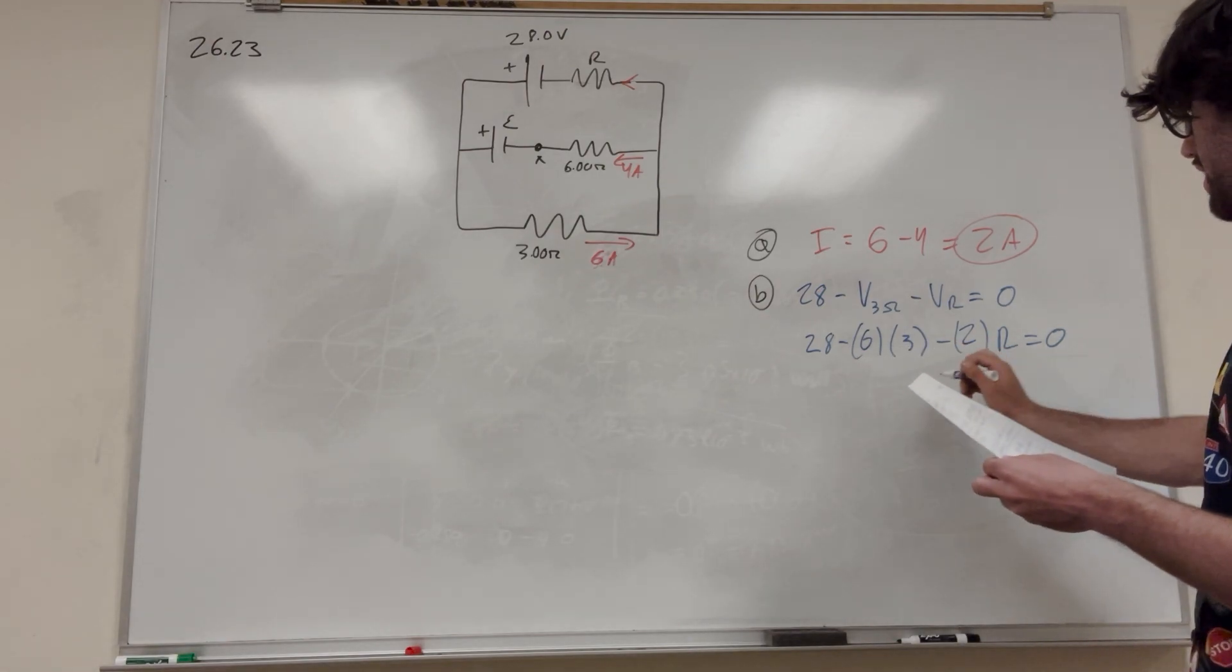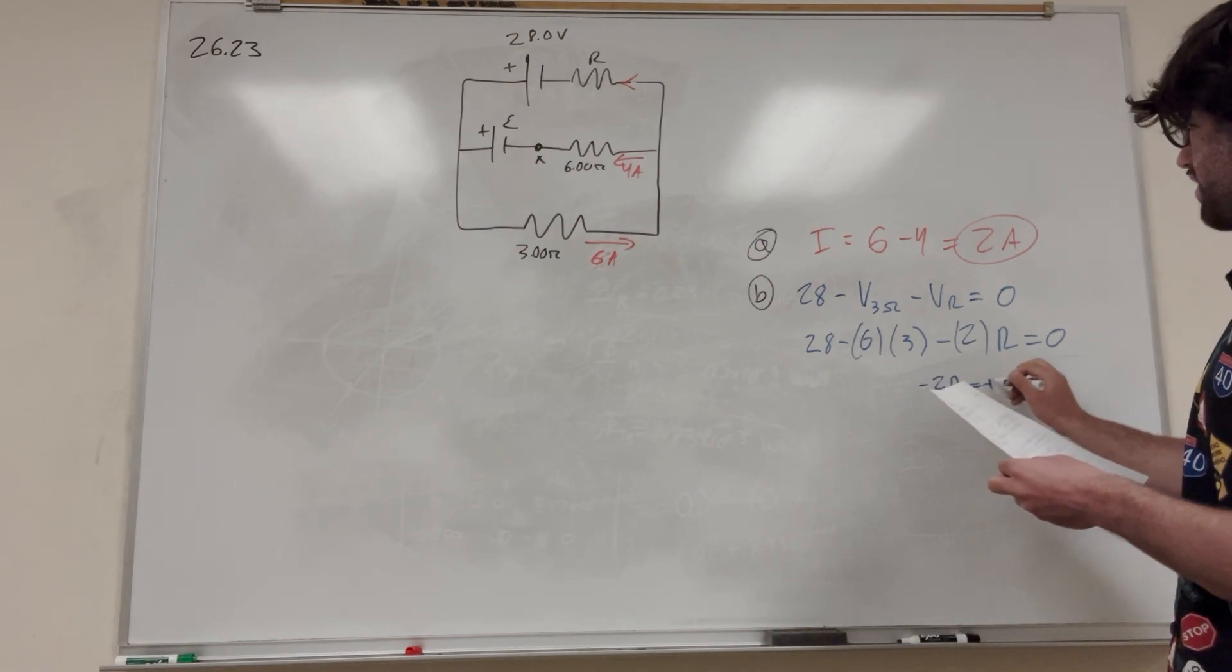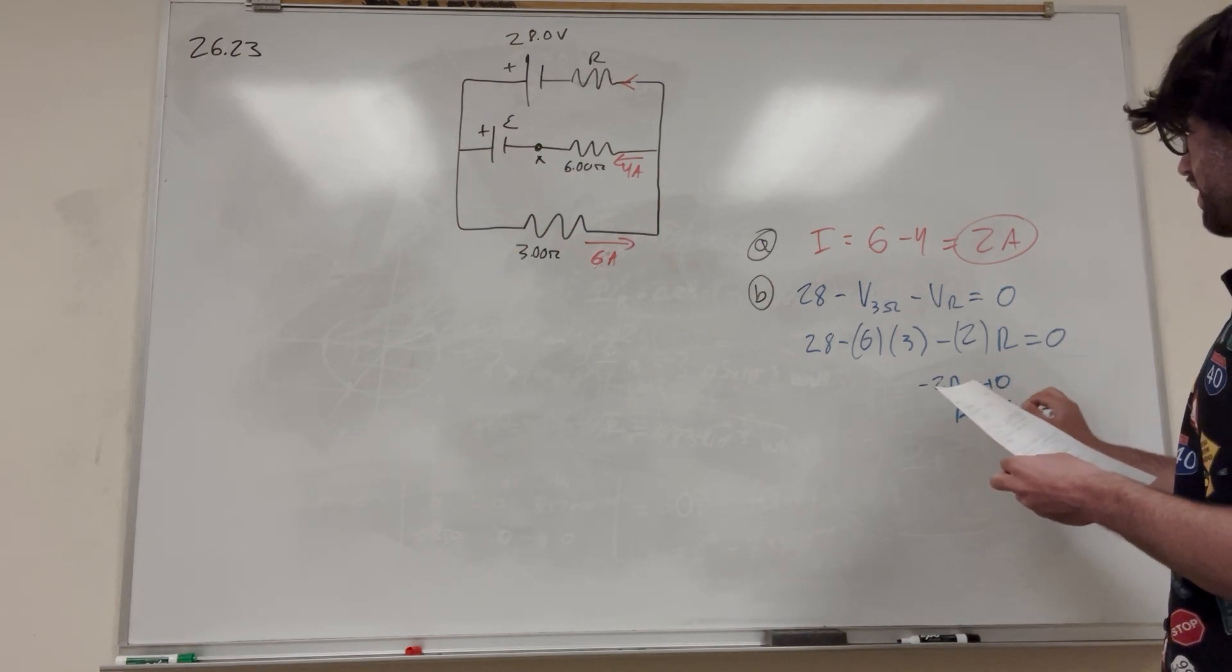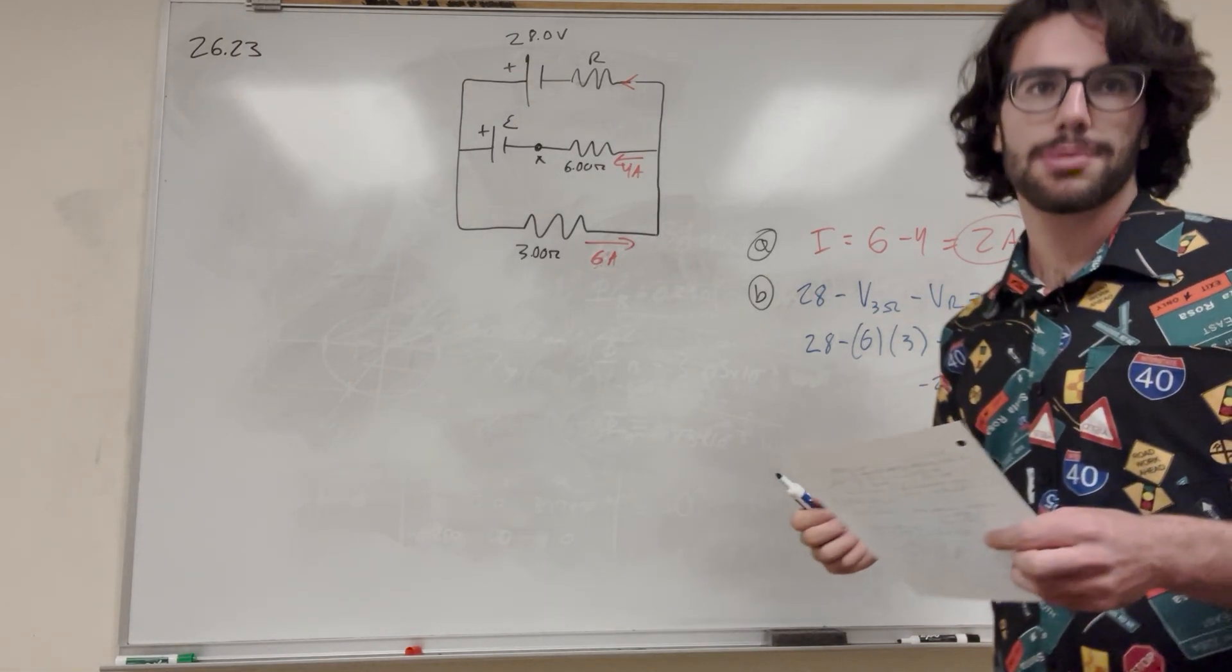So here, if you move everything over, you're going to get that negative 2R is equal to negative 10. So then you're just going to find the resistance is equal to 5 ohms. Nice. So part C, what is part C asking?